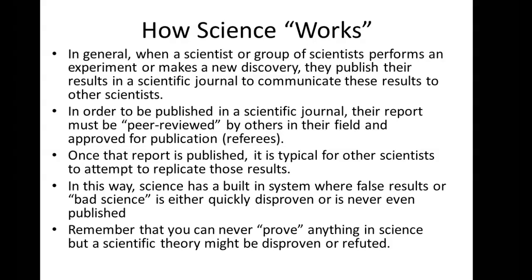You cannot prove anything in science — you can only disprove things. Even the most well-supported scientific theory is subject to experimental verification. If you do an experiment that doesn't fit with a scientific theory, you have to throw that theory out or at least modify it. This is one way science has a built-in system where bad science or false results can be flagged. Science has a built-in safeguard against biases and incorrect information.